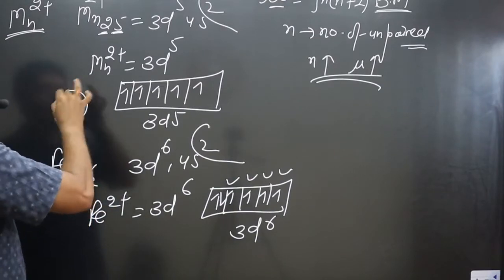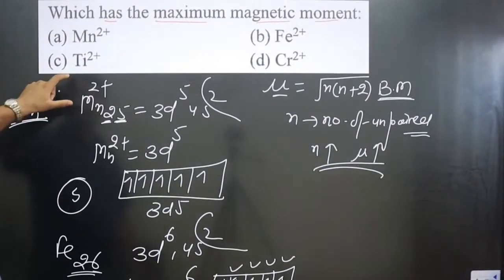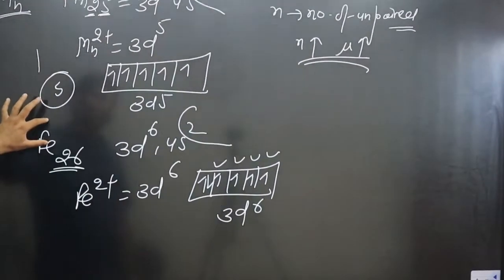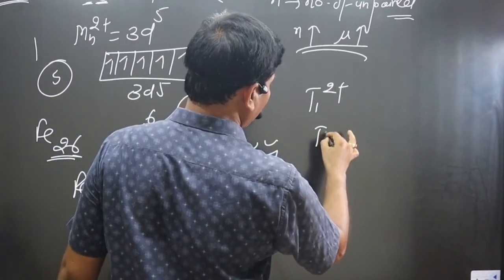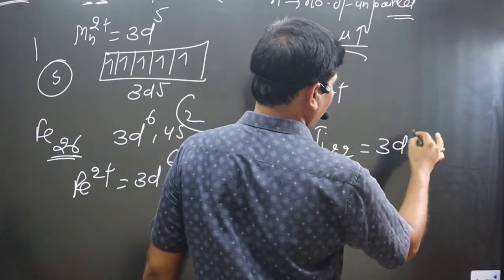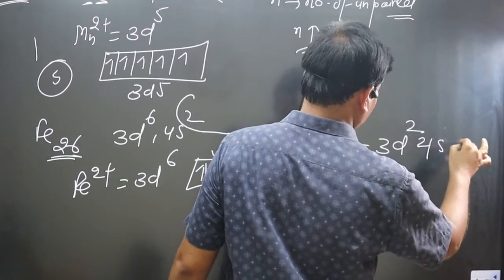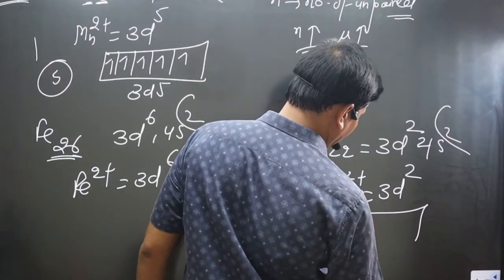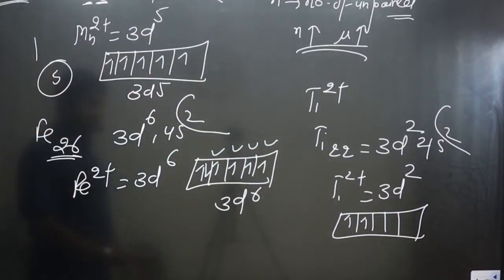Next, Ti²⁺: titanium has atomic number 22 with electronic configuration 3d² 4s². Since Ti²⁺ loses two electrons, we get 3d². Writing the orbital notation, we place one electron in the first box and one in the second, giving only two unpaired electrons.